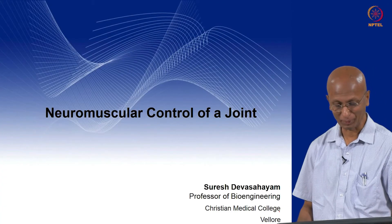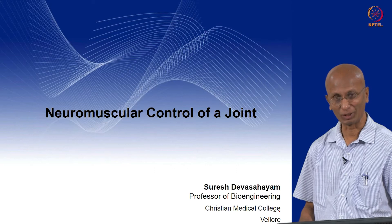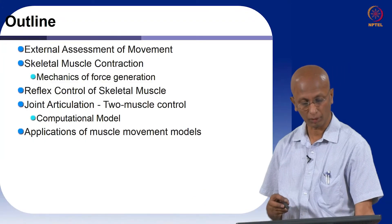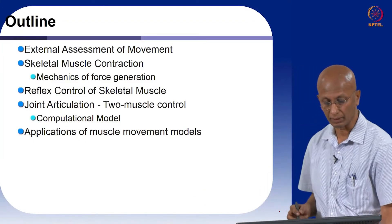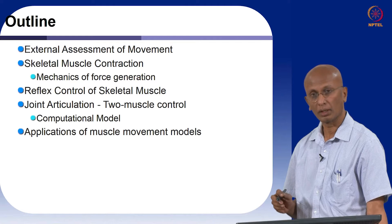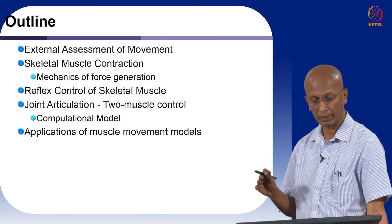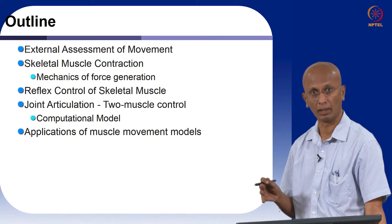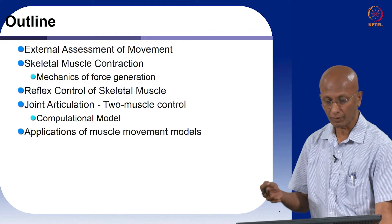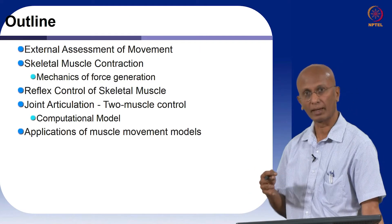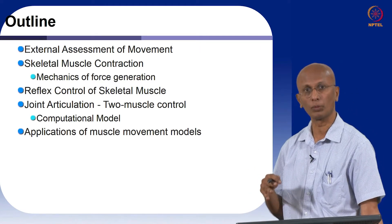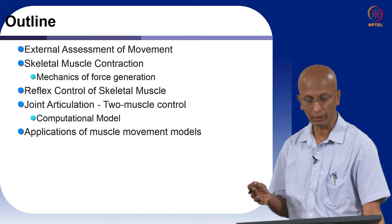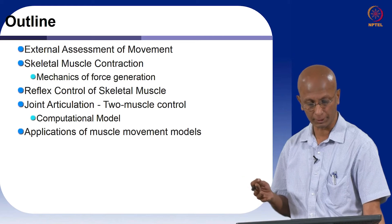I am going to talk about neuromuscular control of a joint. An outline of my talk is given here. I will first talk about how we externally assess movement, how it is done clinically, and then from that we will have an understanding of how we use data in assessing a joint in the musculoskeletal system.